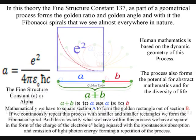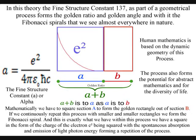Mathematically, we have to square section a to form the golden rectangle out of section b. If we continuously repeat this process with smaller and smaller rectangles, we form the Fibonacci spiral.